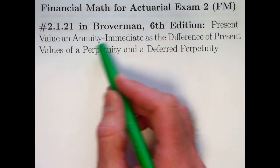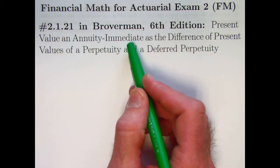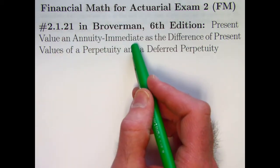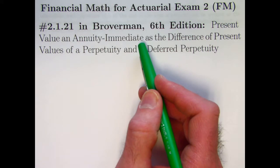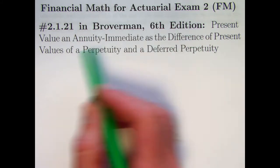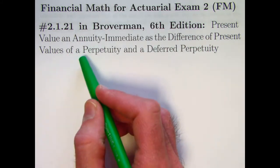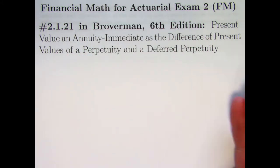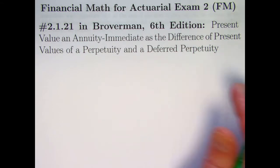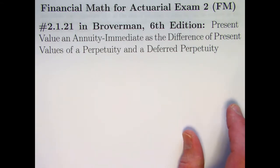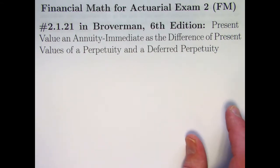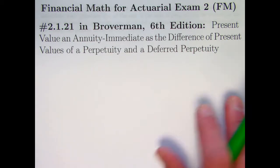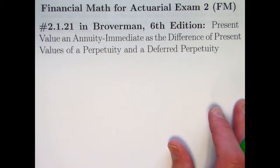We're going to look at the present value of an annuity immediate in a kind of strange way — as the difference of the present values of a perpetuity and a deferred perpetuity. What is a perpetuity? It's a stream of payments that goes on forever; it's an annuity that goes on perpetually.